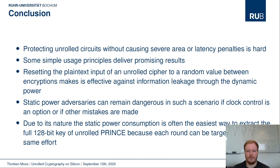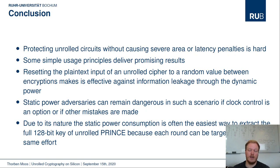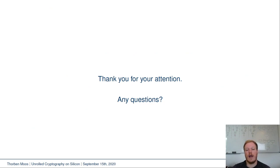In conclusion, effectively protecting unrolled circuits without causing severe area or latency penalties is pretty hard. But some simple usage principles, if correctly applied, can deliver promising results. For example, when the plaintext input is reset to a random value unknown to the adversary between encryptions, it is difficult to extract secret information through dynamic power. Static power adversaries remain dangerous if clock control is an option or other mistakes are made. Due to its different nature, static power consumption was clearly the easiest method to extract the full 128-bit key, because each round can be targeted with the same effort. Thank you very much for your attention — I'm happy to answer questions in the live session or via email.